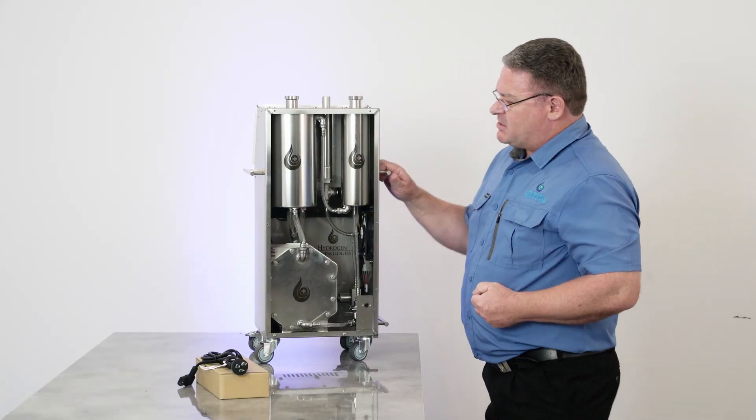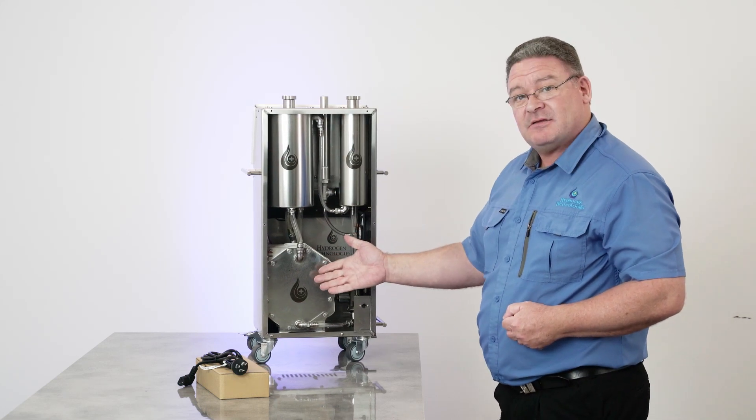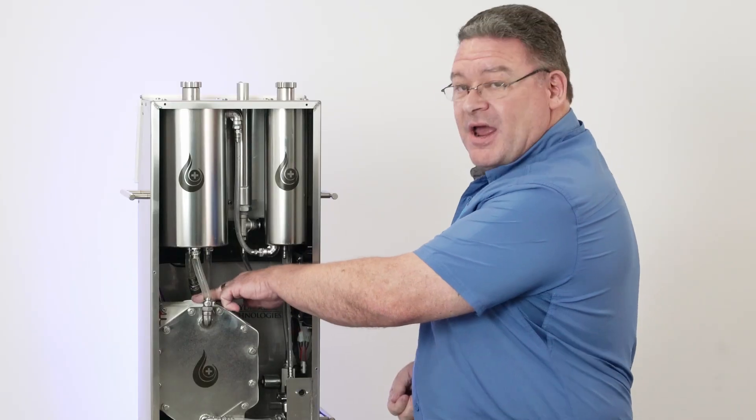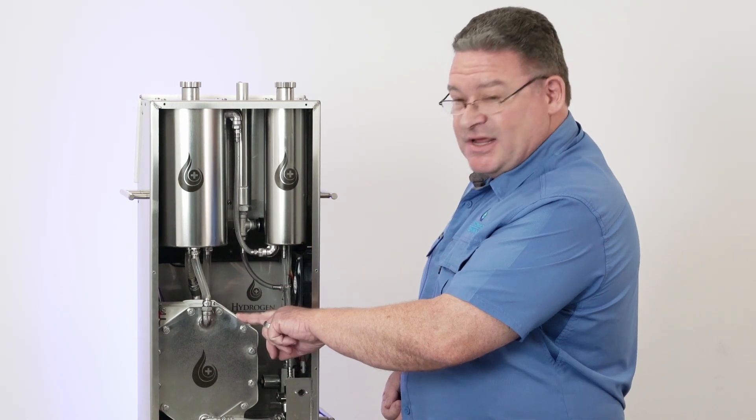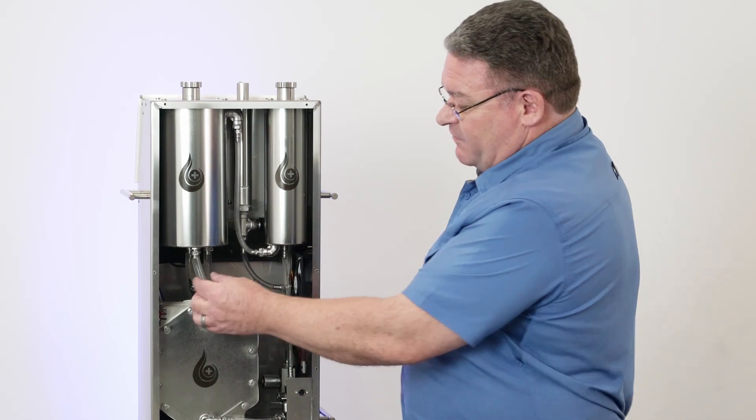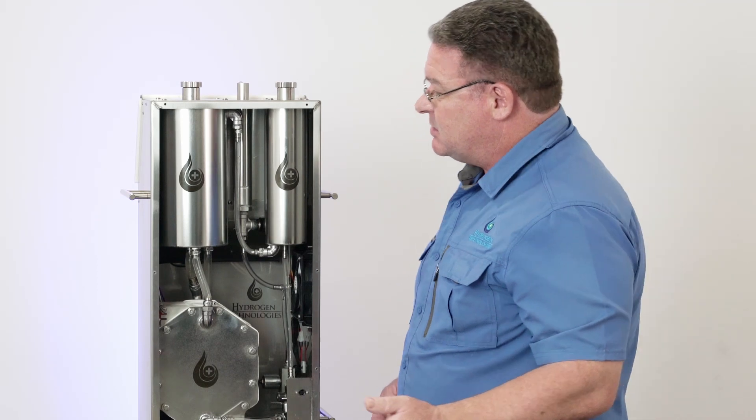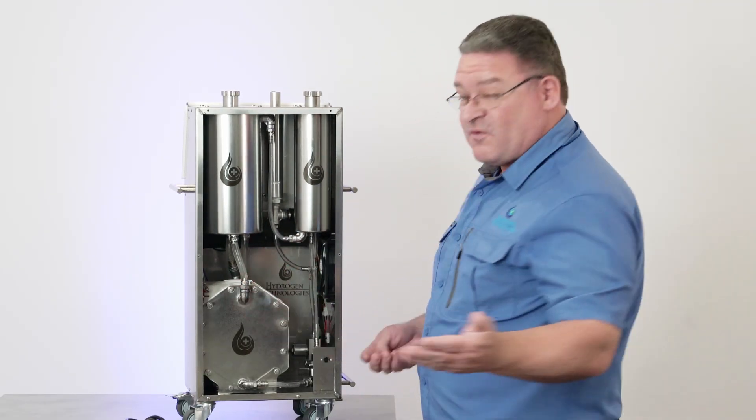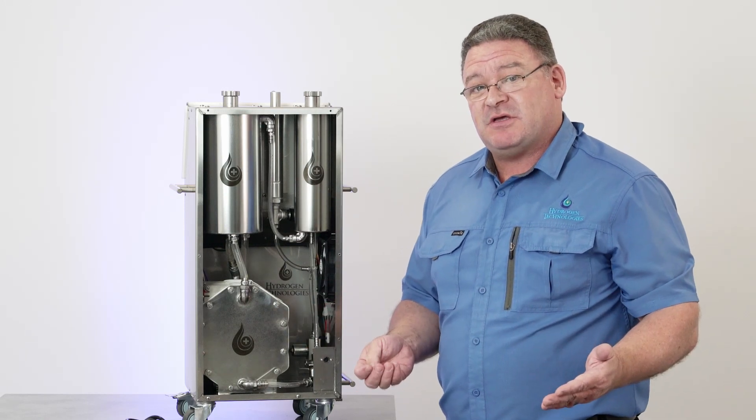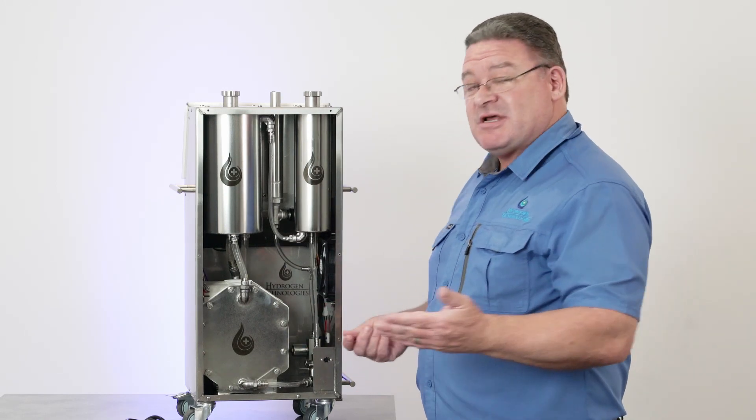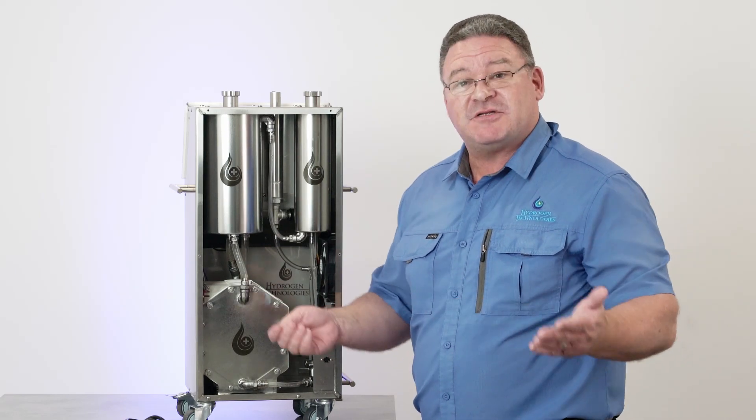First thing you'll notice is larger tanks, larger cell. There is a different power control configuration on the cell itself. We've got EPDM gaskets. We've got laboratory grade silicon hoses. It's built for biology, as you know, multiple different things that we can do with these machines. So we've tried to take the utmost care for biology and diversification of use.